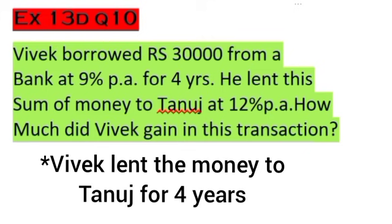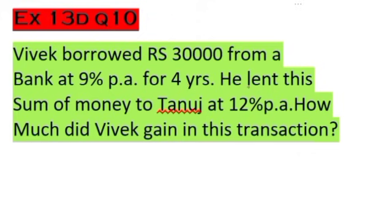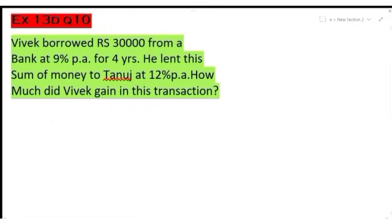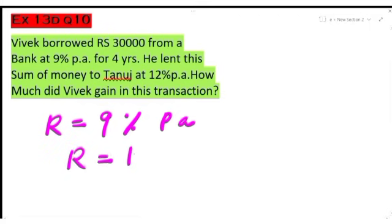In the first part, Vivek borrowed money for four years, so he has to pay the bank principal plus simple interest. In part two, Vivek lent the money for the same period to Tanuj, meaning he will receive the money back with simple interest. The difference is the rate per annum — Vivek borrowed at 9 percent per annum and lent at 12 percent per annum to Tanuj.